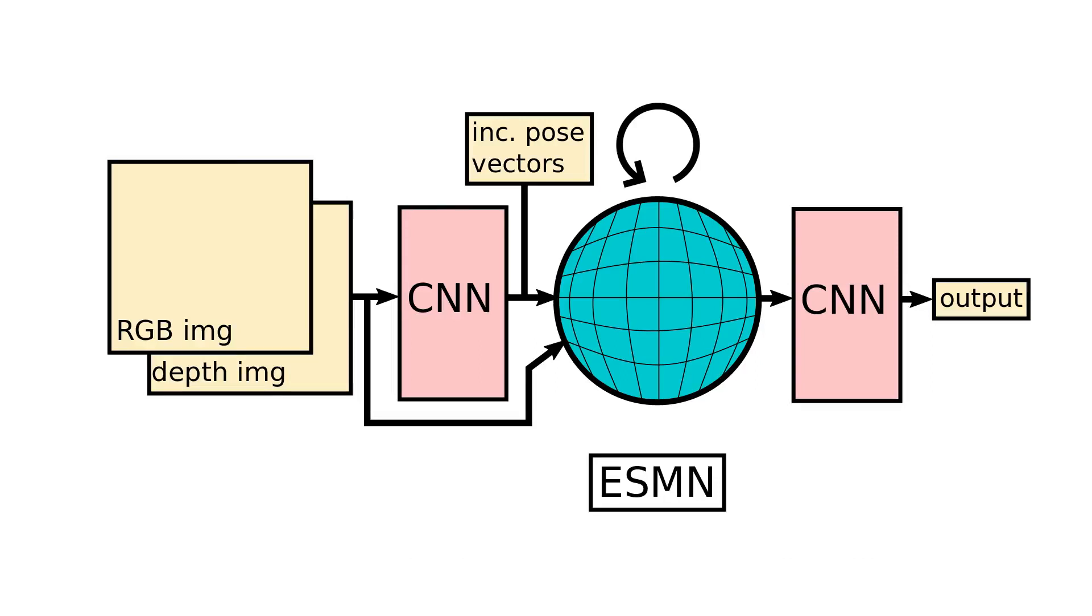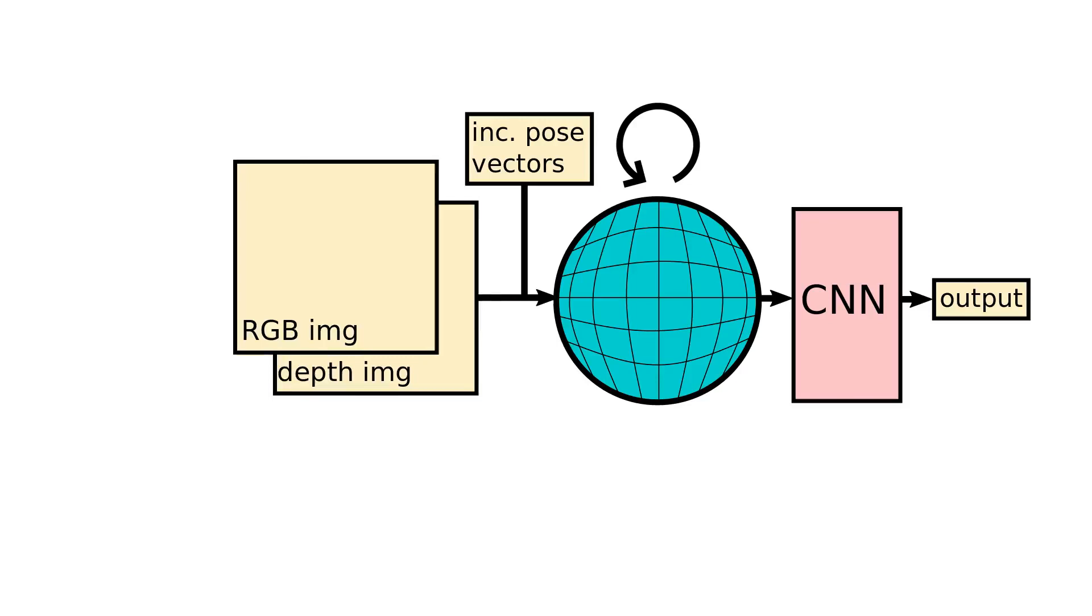For some tasks, the post-module convolutions are sufficient, with color values projected directly into the memory. We refer to this network as ESMN RGB.